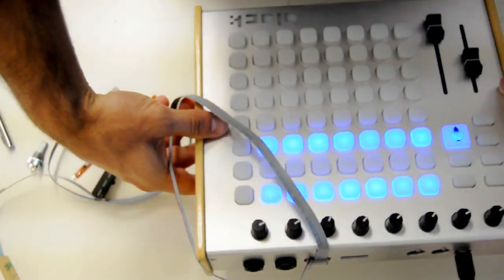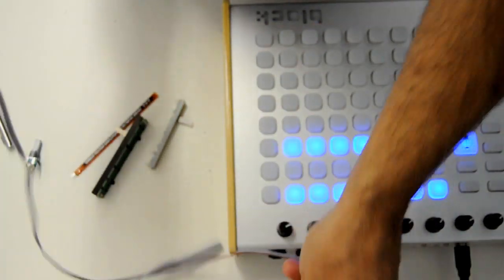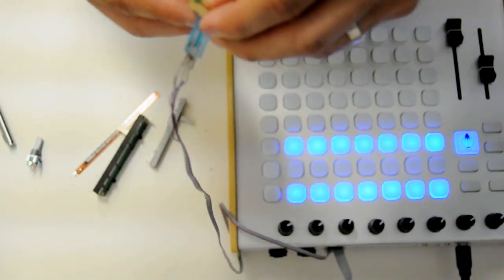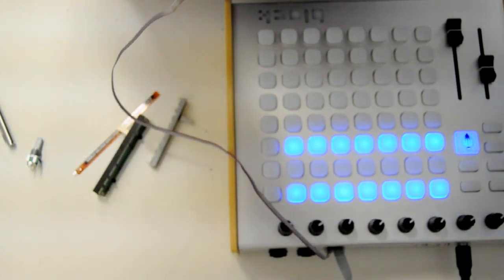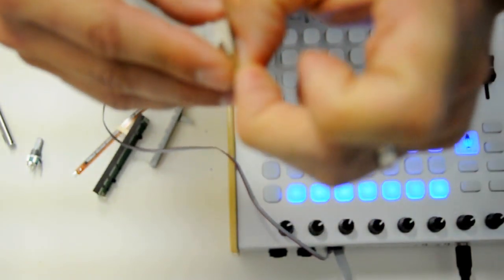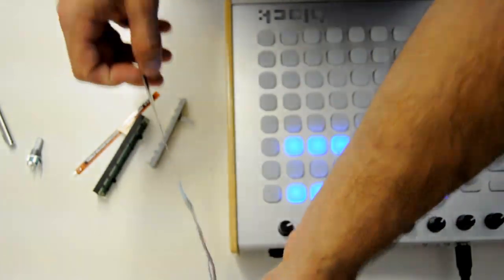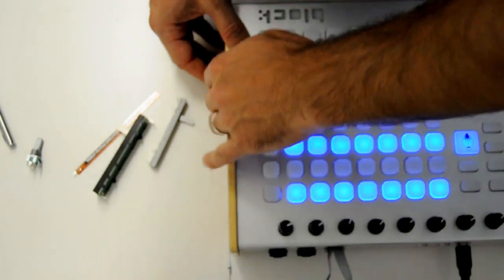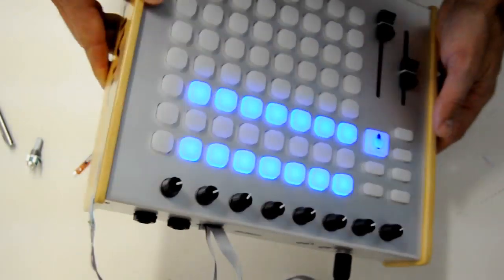Now the cool thing about these soft pots is they have these little rubber backings that are adhesive on them, so you can just peel off the 3M paper backing. And what I'm going to do is go ahead and mount it onto the side of my controller. So here we go. Now there's basically an extra fader on the side of my controller.